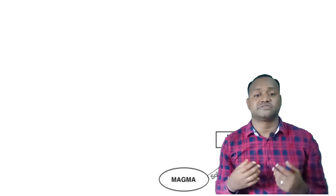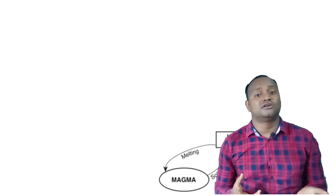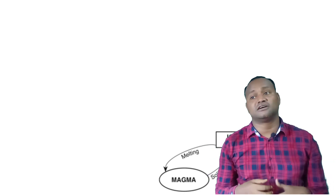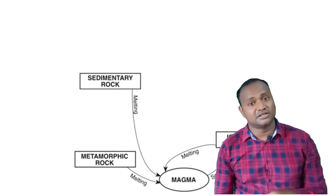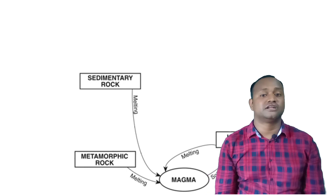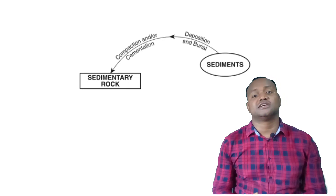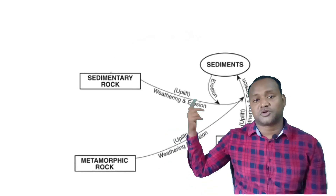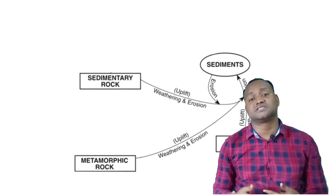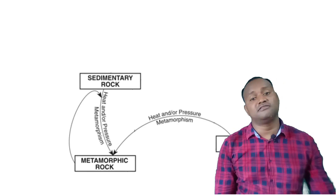Due to further temperature and pressure over the metamorphic rock, it is again converted into magma. The magma comes out and forms igneous rock again, which then weathers and erodes to form sedimentary rock. This is a cyclic process — the rock cycle — and it is a continuous, ongoing process, as shown in the diagram.